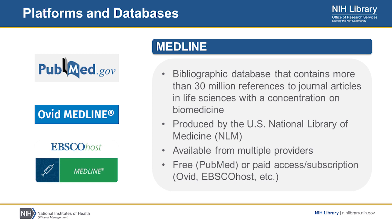So let's talk a little bit about platforms and databases. You may be familiar with a database called Medline. It is a bibliographic database that has more than 30 million references to journal articles in life sciences with a concentration in biomedicine. It is produced by the U.S. National Library of Medicine, or NLM, but it is available through multiple providers. You may be more familiar with it as PubMed, which is freely available to anyone. But Medline is also available through paid access or subscription resources such as Ovid, EBSCOhost, and other platforms. You can actually do a search of Medline across multiple platforms, and while you would get many of the same things, how you search it and what results you get could be different based on the platform, even though you're searching the same database.